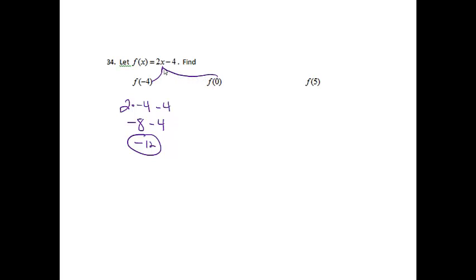Okay, now we'll put 0 in for the x. So 2 times 0 minus 4. It's just like the problem where we had to fill in the table. 2 times 0 is 0. Minus 4 is negative 4.